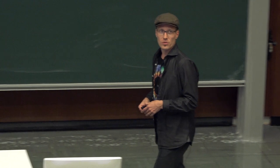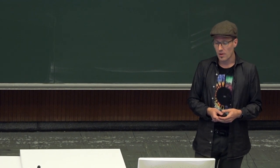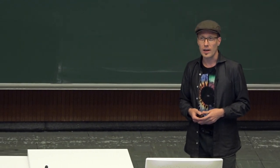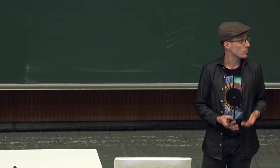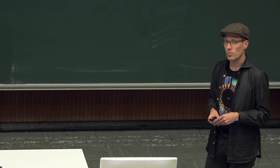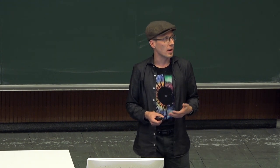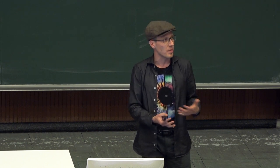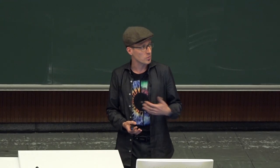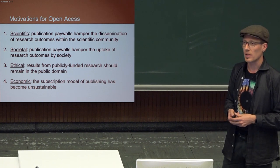What are the motivations for open access? There are at least four, and this is how Science Europe frames this issue. First, if you have publications behind paywalls, there are many institutions around the world whose scientists cannot access these articles. If you can't read the latest research, you are not able to participate in modern research throughout the world. The other motivation is societal — a normal person might have a spouse or family member with some rare disease and want to find research addressing it, but normal people don't have access to journal subscriptions.